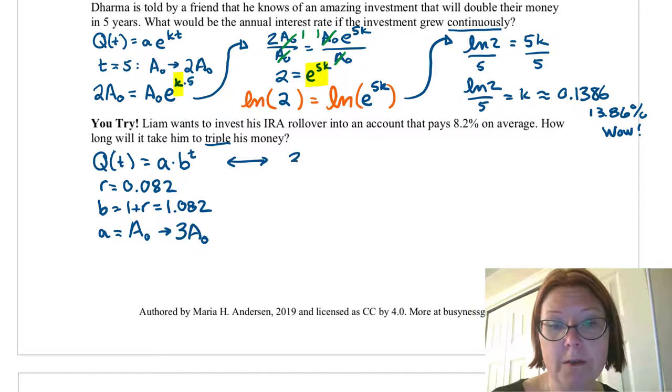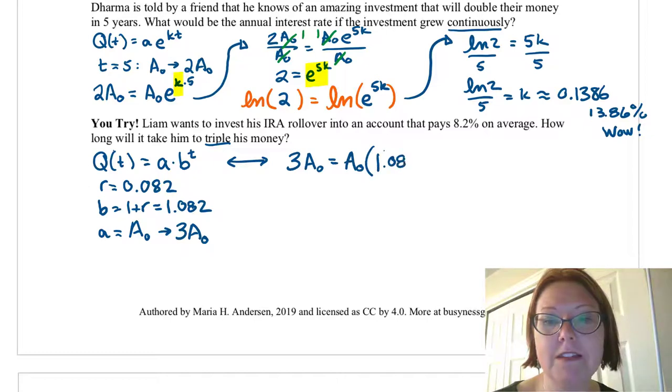Let's put all of that into the formula. We're going to have a result of 3 times capital A sub 0. And that's going to be equal to capital A sub 0, the initial value, times the b value, 1.082, raised to the t power.